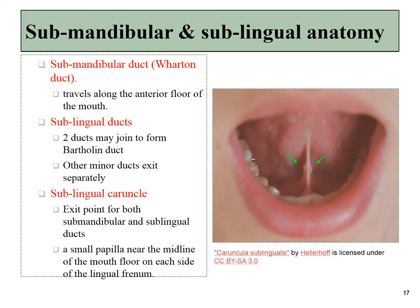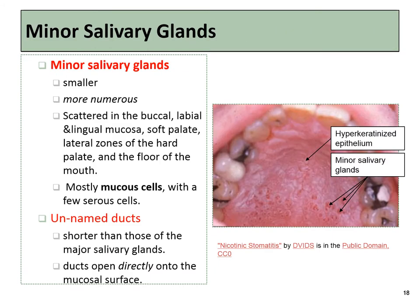Next up are the submandibular and sublingual salivary glands. These glands share an exit called the sublingual caruncle — they're below the tongue. There are also a number of minor salivary glands scattered throughout the oral cavity. The condition nicotinic stomatitis allows us to actually see these minor salivary glands once you give them a more whitish keratinized background to be distinguished from. These small salivary glands contain acini, mostly mucous ones, and a tiny duct that doesn't get any sort of name, that exits into the oral cavity.